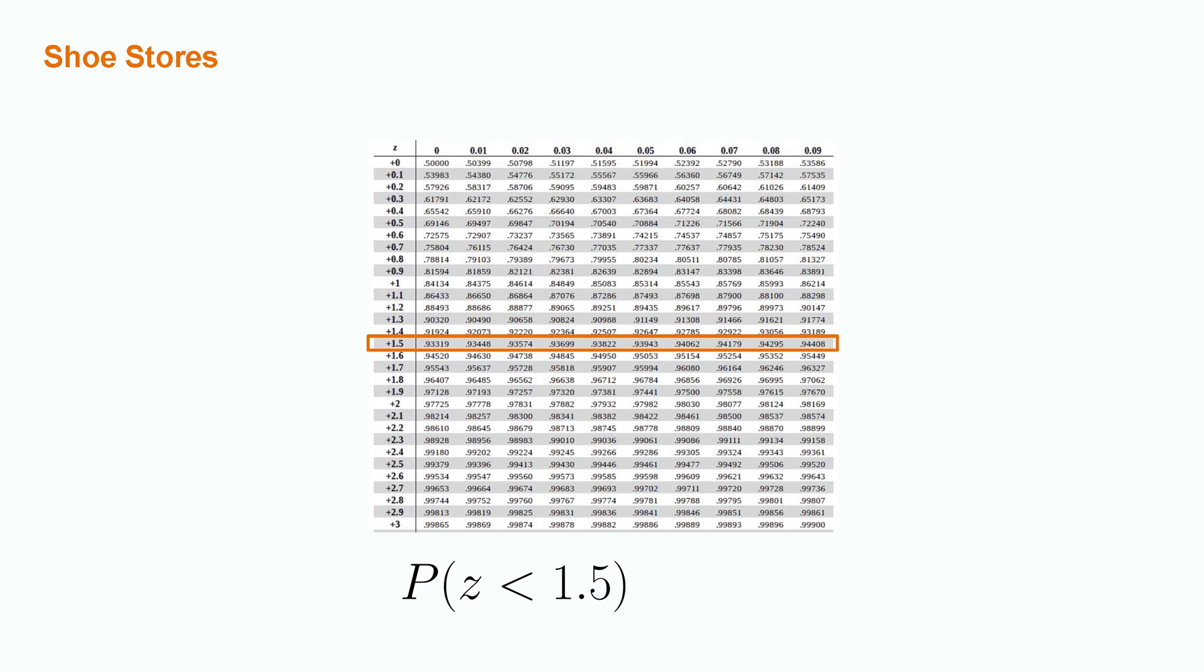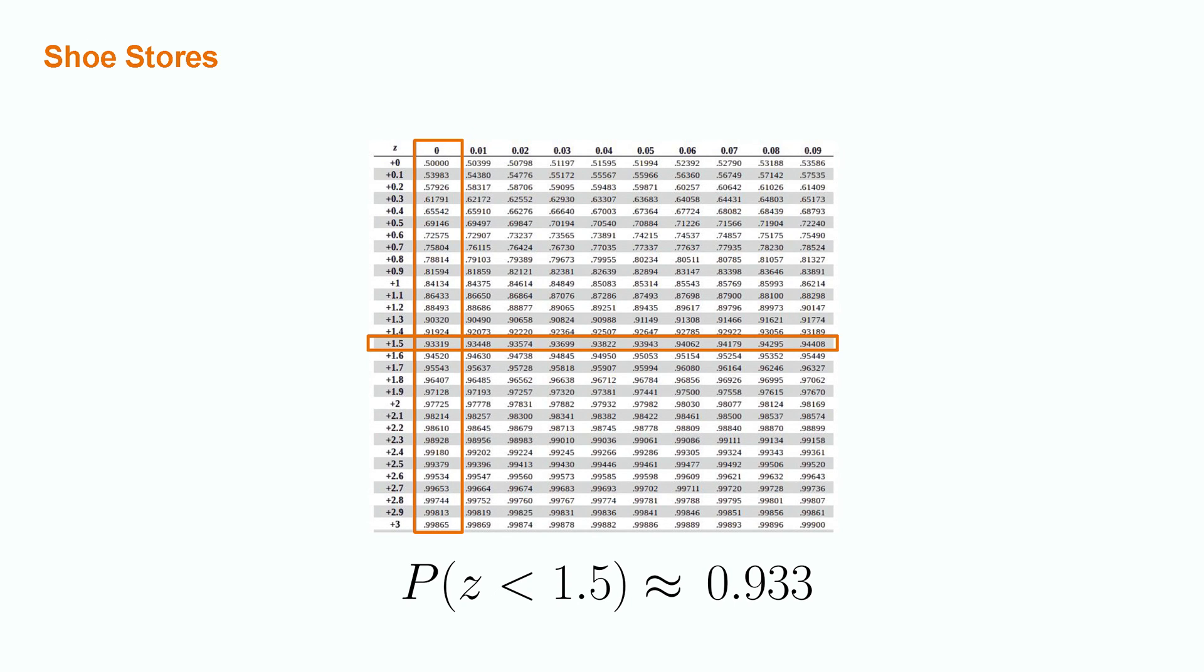Moving to our z-table, we first zero in on the row for positive 1.5, and then the column for 1.50, leading us to the probability of observing as z of less than 1.5 as approximately equal to 0.933. Bringing this back to the probability being greater than 1.5, we have that the probability of z greater than 1.5 is equal to 1 minus the probability of z less than 1.5. This gives us 1 minus 0.933, which is equal to 0.067.